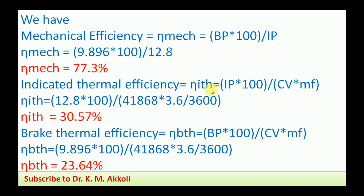Indicated thermal efficiency η_ITH = (IP × 100) / (CV × MF), where CV is calorific value and MF is the mass flow rate of fuel. Since IP is in kW and CV is in kJ/kg, units are consistent. η_ITH = (12.82 × 100) / (41868 × (3.6 / 3600)) = 30.57%.